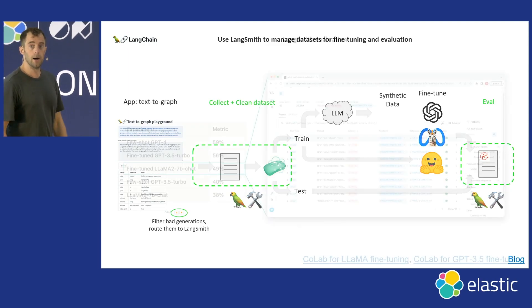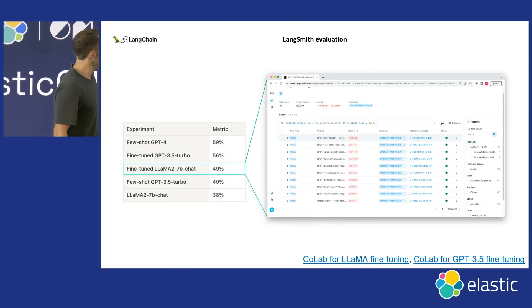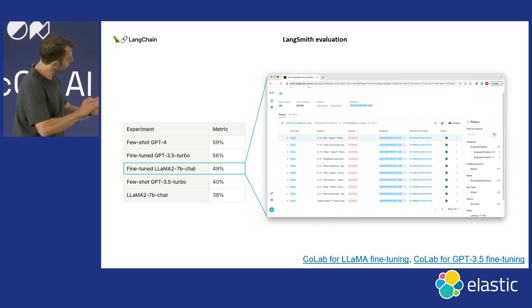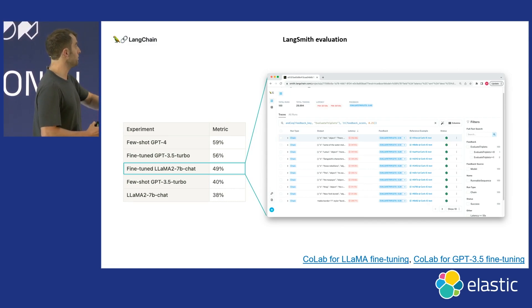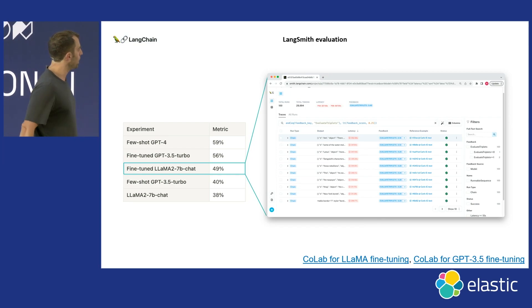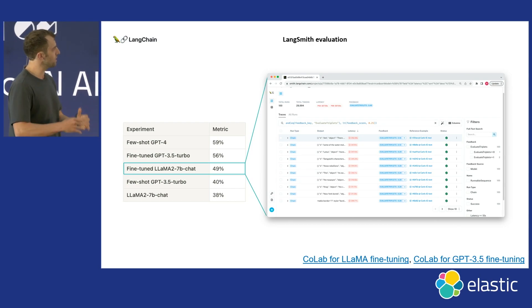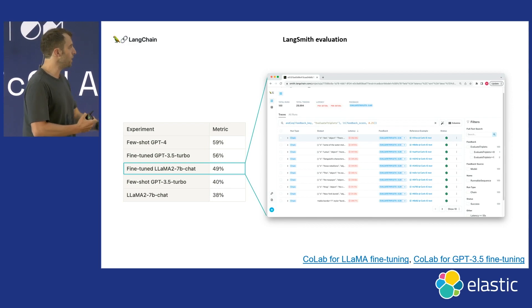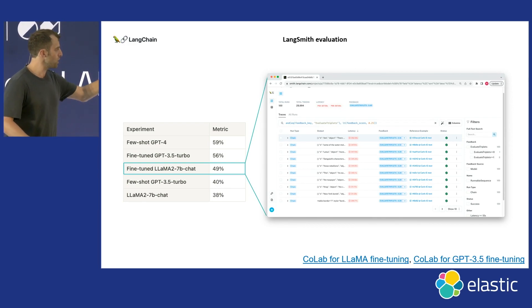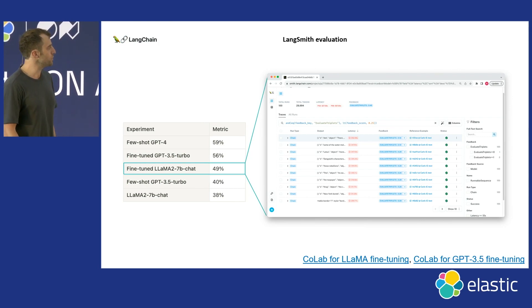We ran LangSmith evaluations across a bunch of different experiments. The main finding was that a fine-tuned LLaMA 2 model actually did better than few-shot GPT-3.5, which is impressive for a much smaller model. Few-shot GPT-4 did better, but the key point is the workflow: use LangSmith to collect app generations, filter and clean them, use them for training and evaluation. All of this is open source and available online along with usage guides for fine-tuning.